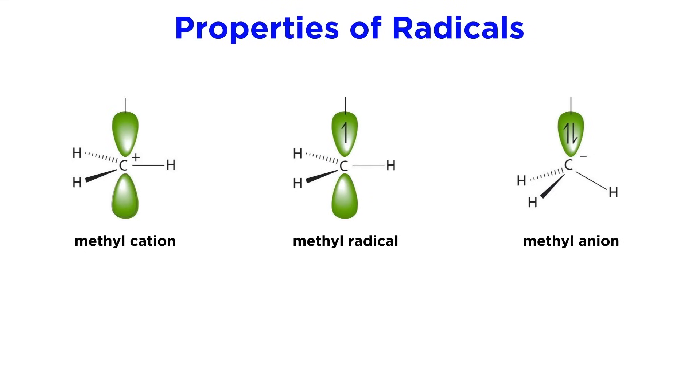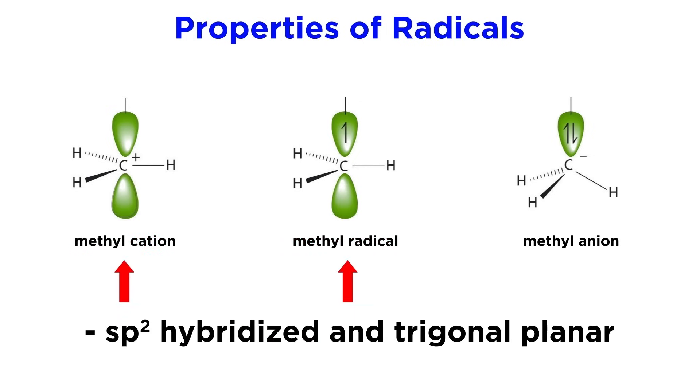First, we want to understand that carbon radicals will behave similarly to carbocations. Both of these are sp2 hybridized and therefore exhibit trigonal planar geometry. Because they utilize sp2 hybridized orbitals, the carbon must have one unhybridized 2p orbital left over, and with the cation that will remain empty, whereas for the radical the unpaired electron will sit in that orbital.